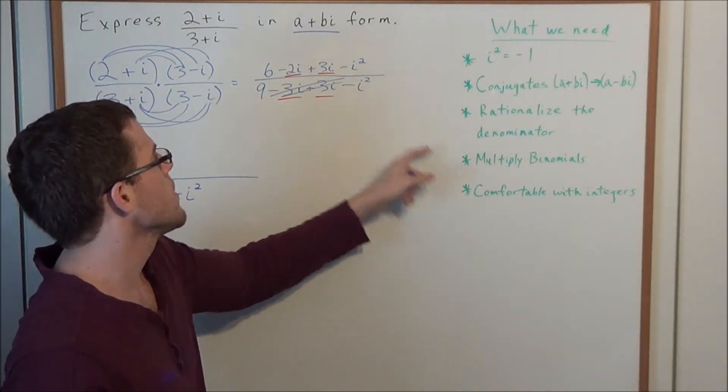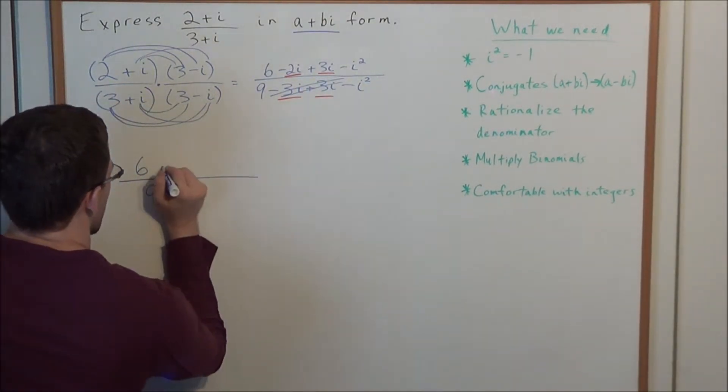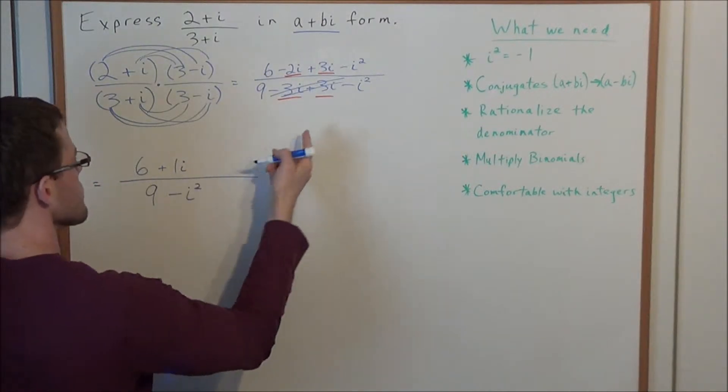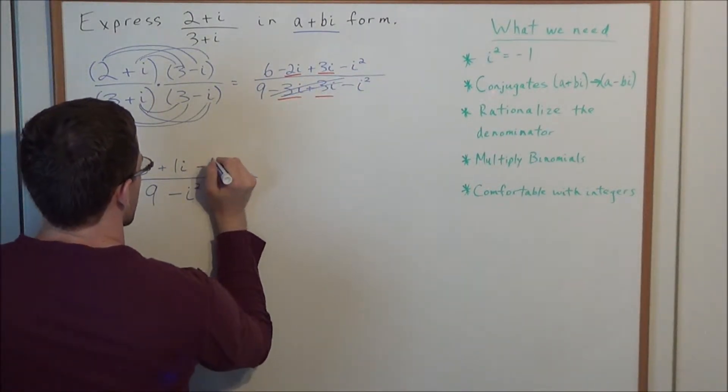And we have a negative 2i plus 3i. Well, really what we're looking at is negative 2 plus 3, which is a positive 1. So we're looking at a plus 1i. And keep in mind, there's also that minus i squared still left.